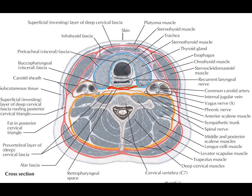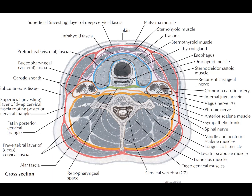Posterior to the buccopharyngeal part of the visceral fascia, we have the alar fascia, which meets the prevertebral fascia. The prevertebral fascia, shown in orange, covers all the muscles around the vertebral bodies. Posteriorly, only two fascial layers extend: the investing layer superficially and the prevertebral fascia deeply. In the midline, we can identify the visceral fascia, the prevertebral fascia, and the alar fascia.